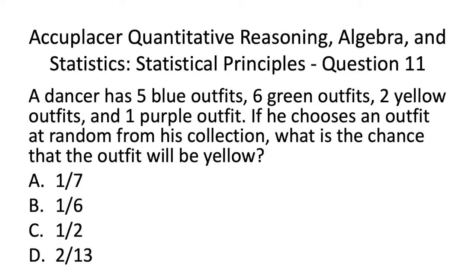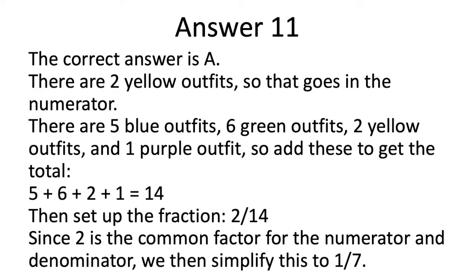Here is Acuplacer QAS Statistics Practice Test Question 11. The correct answer is A. There are 2 yellow outfits, so that goes in the numerator. There are 5 blue outfits, 6 green outfits, 2 yellow outfits, and 1 purple outfit, so add these together to get the total of 14. Then set up the fraction: 2 in the numerator for the available yellow outfits, and 14 in the denominator for the sum of all outfits. Since 2 is the common factor for the numerator and denominator, we simplify the fraction to 1 seventh.